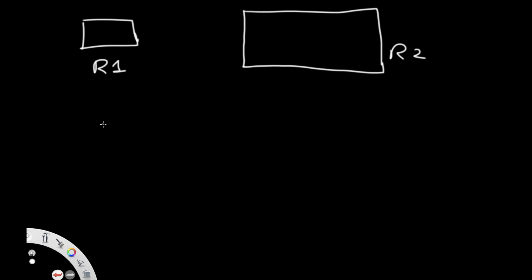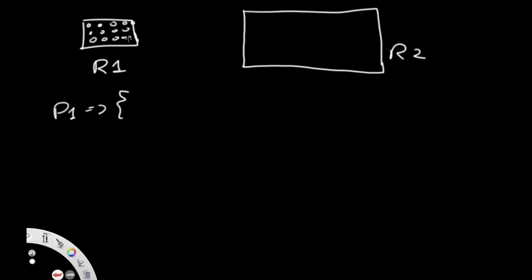I'm going to have two sets. The first set, P1, is going to include all of the points inside R1 — this point, this point, all the way until we get all the points inside R1. This is going to have a total of x points.